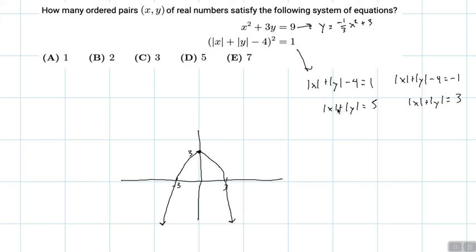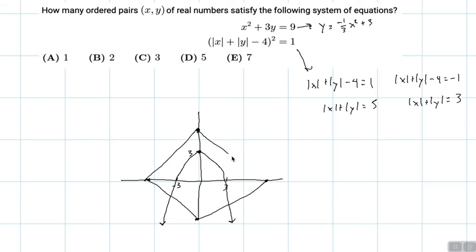For the absolute value equation, it's going to reach up to five and hit every point at five. The graph of this is going to look something like a diamond shape, and the graph of the parabola looks something like this.